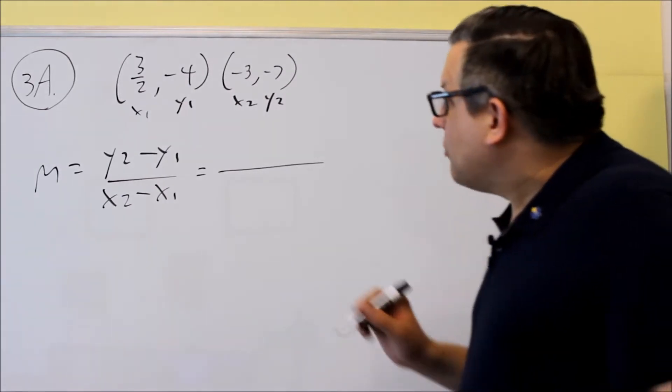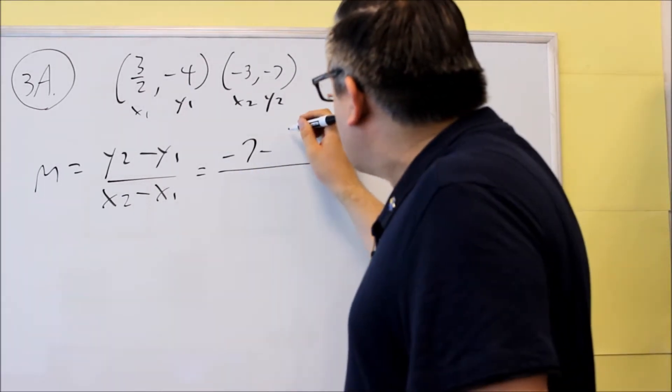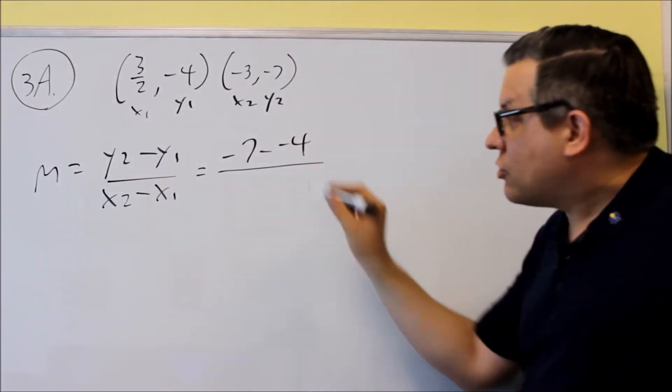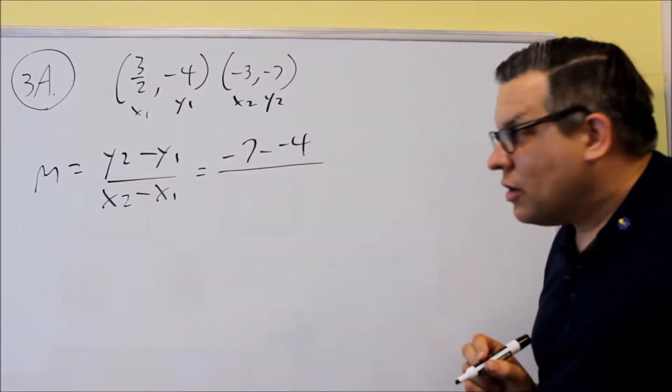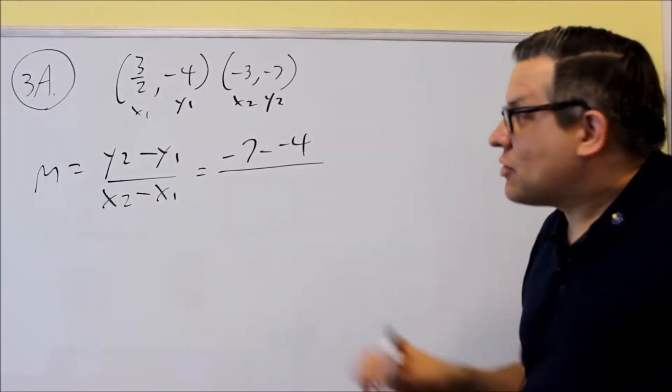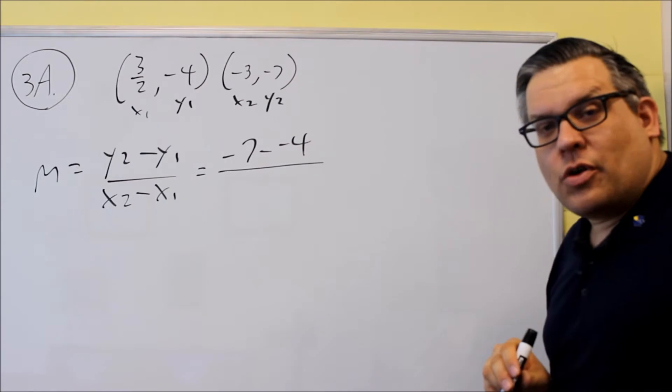So on top we have y2 minus y1, negative 7 minus negative 4. So be careful when you're plugging the numbers in. Make sure you pick the correct one. Common mistake I see is people accidentally put the x1 in there in the wrong spot. So be careful, it's just the y values we're using.